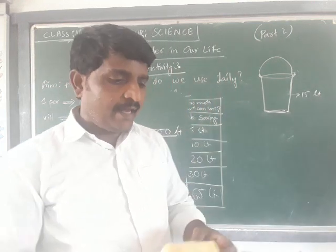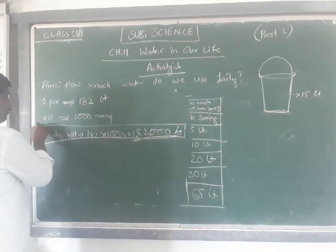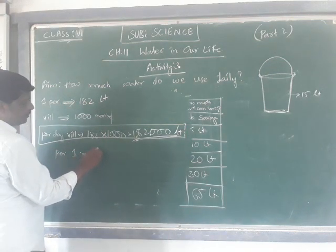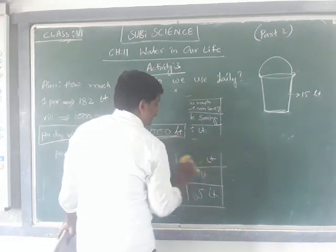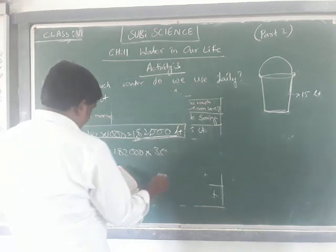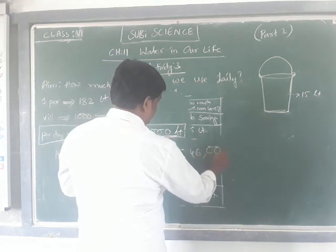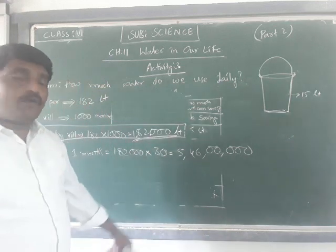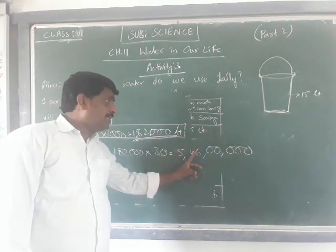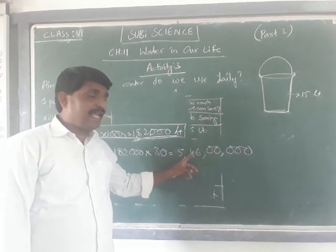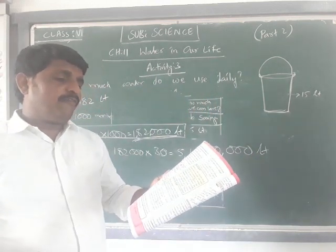Now, the approximate quantity of water used per month in the colony: per day we are using 182,000 liters, so per month it is 182,000 liters multiplied by 30 days. That gives us 5 crores 46 lakhs liters of water utilized per one month.